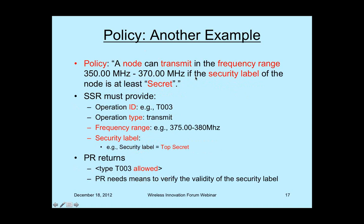Another example: a node can transmit in frequency range 350 to 370 megahertz if the security label of the node is at least secret. The security label — say, top secret — must be provided. The return is allowed, because top secret is higher than secret, satisfying the 'at least secret' requirement. The policy reasoner needs means to verify the validity of the security label — it's not enough that someone claims top secret clearance; the reasoner must verify it. This is closely related to the architecture and standard of ZACOMO.